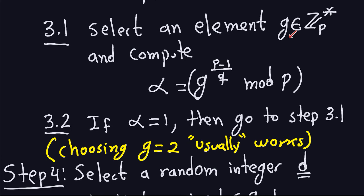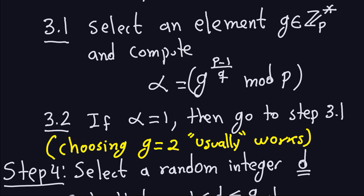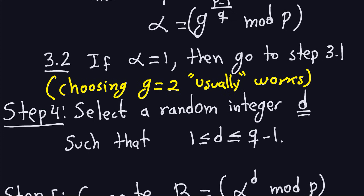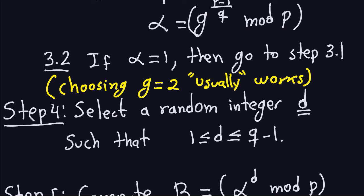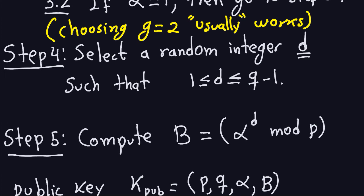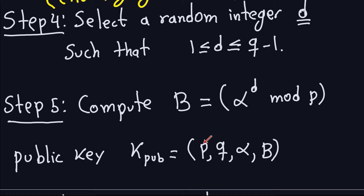Step three can be implemented easily with a while loop in Java, for example. Step four: select a random integer D between 1 and Q−1 — this is straightforward. Step five: compute B = alpha^D mod P, where alpha comes from step three and D from step four. This gives a number B.